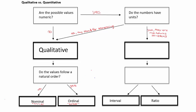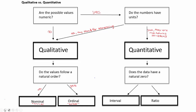Coming back up the other side of our table, if our data had numbers and the numbers are measuring something, we answer yes and get a different type of data called quantitative data. The word 'quant' means number, so we have numeric data. Once we've determined our data is numeric, we ask ourselves a question to determine if it is interval or ratio data: does the data have a natural zero?